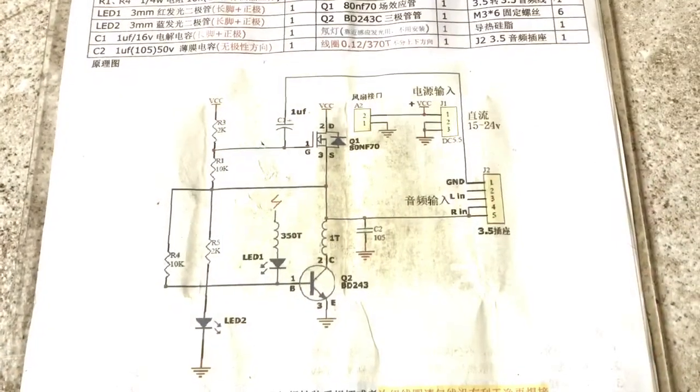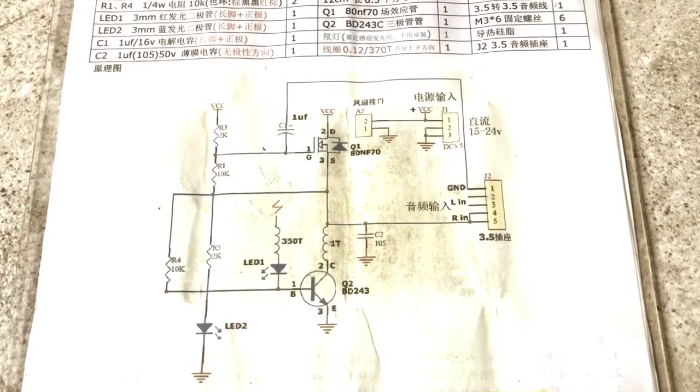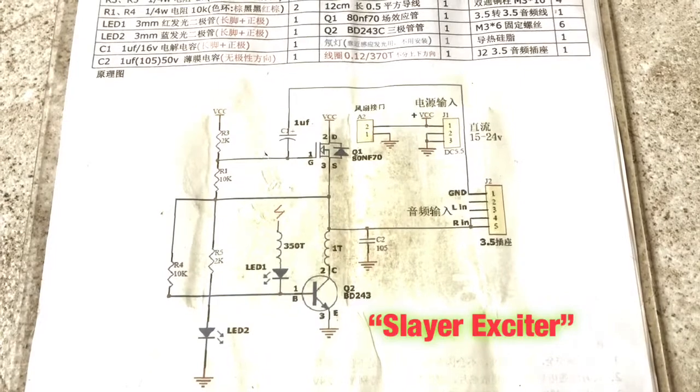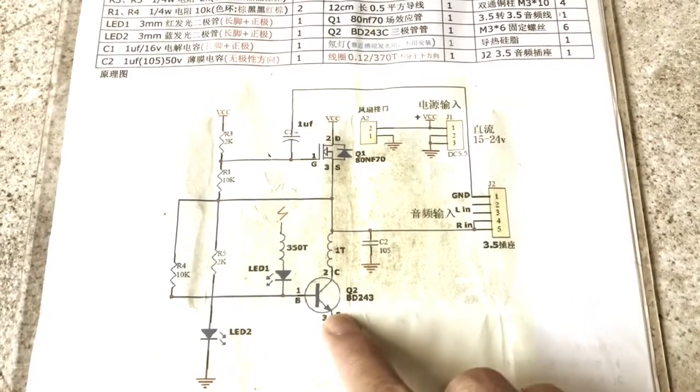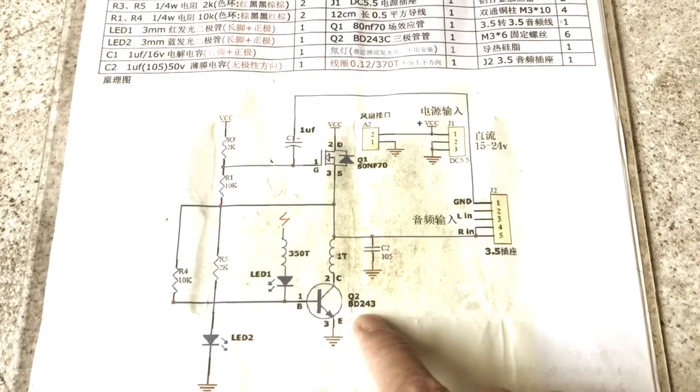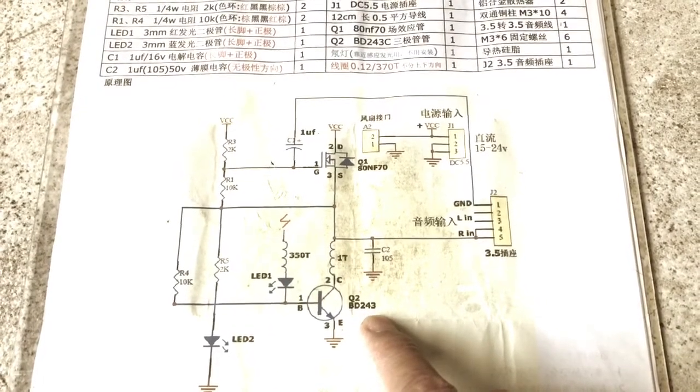Alright, here's the schematics of the musical Tesla coil which was purchased. It uses the popular Slayer exciter method to work, meaning it has an NPN transistor such as this BD243C. The BD243C is a bipolar junction transistor.